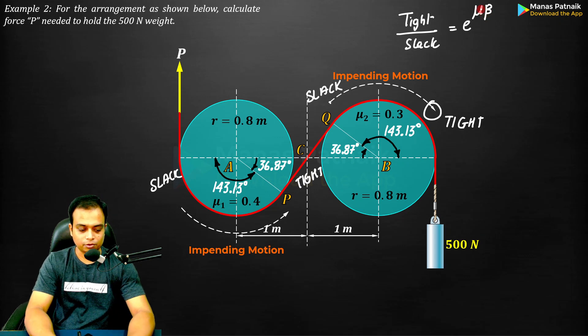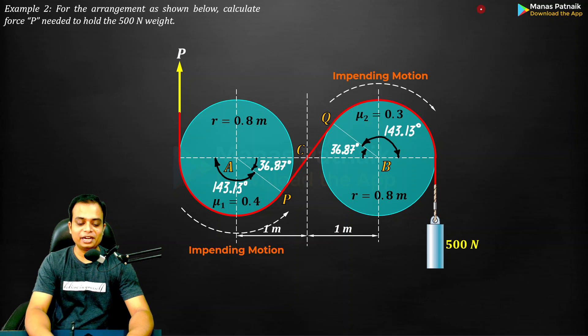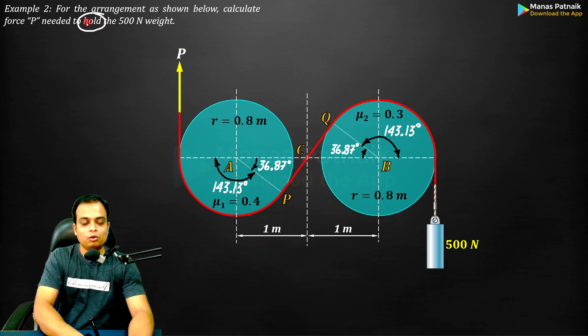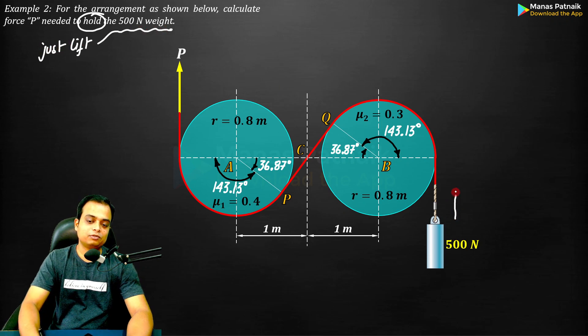One more thing I need to tell you: let's say if instead of writing 'hold', we just say P needed to lift, just lift the 500 newton weight. In that scenario, this would have been the impending motion.